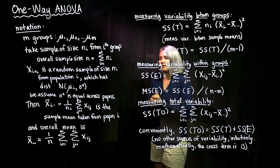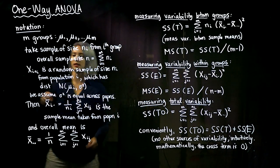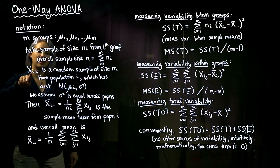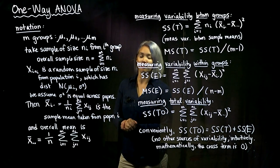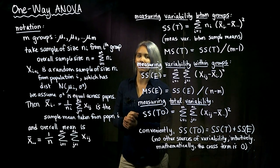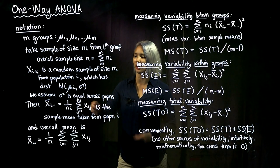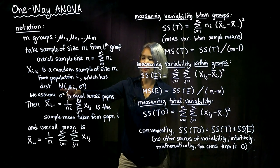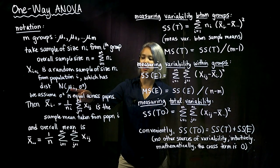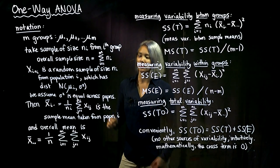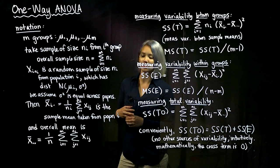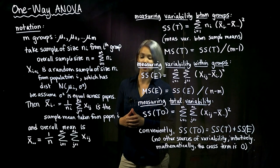We need to define our random sample. The sample we take is denoted x_{i,n_i}, so this is a random sample of size n_i from the i-th population. We're going to assume that these populations have a normal distribution with mean mu_i for the i-th population, and then a shared variance sigma squared. This is an assumption we're making — that the variance is shared across the different populations.